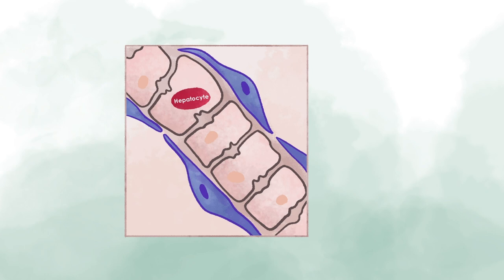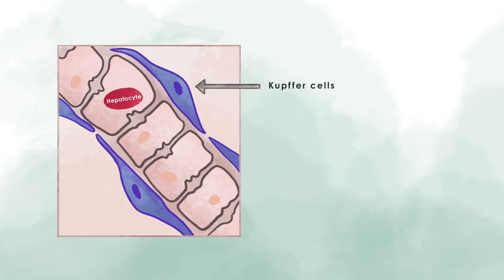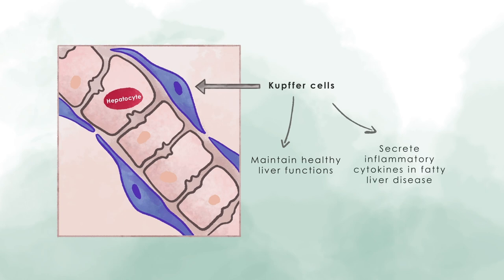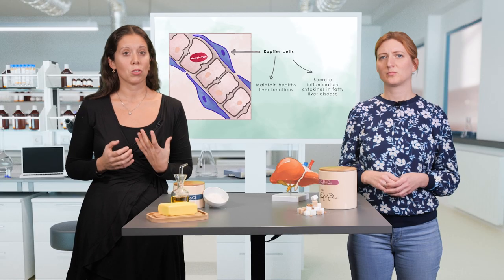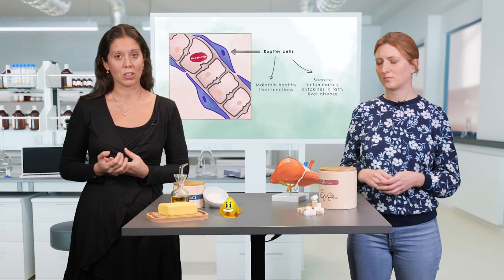Of note are the macrophages of the liver, the so-called Kupffer cells. In a healthy liver, they maintain normal liver functions. However, during the development of fatty liver disease, they also secrete inflammatory cytokines, which lead to hepatic inflammation.